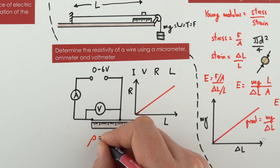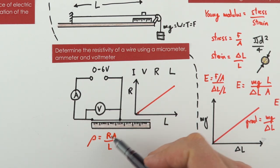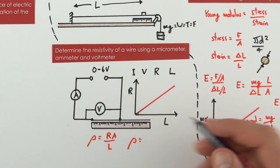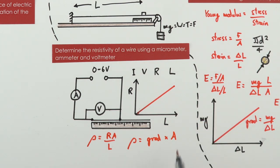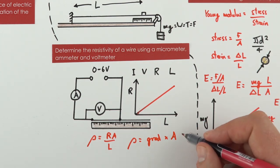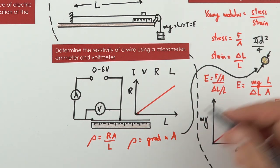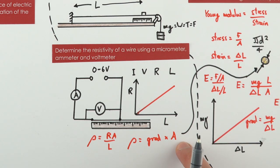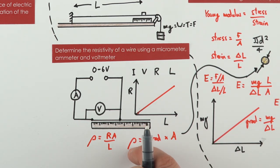The resistivity ρ = RA/L. The gradient of the resistance vs length graph equals R/L, so resistivity equals the gradient multiplied by the cross-sectional area of the wire. The area is calculated the same way as before: A = πd²/4, measuring the diameter three times with a micrometer to find the mean, ensuring the result is in square metres. This gives a value for ρ in ohm-metres.